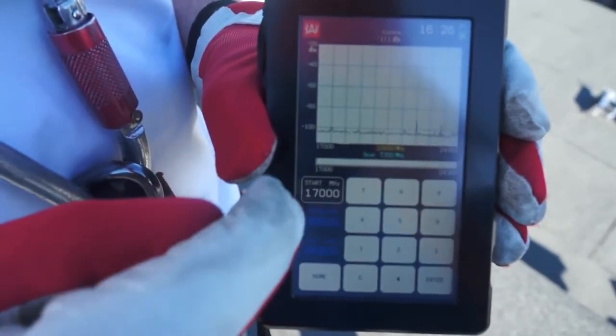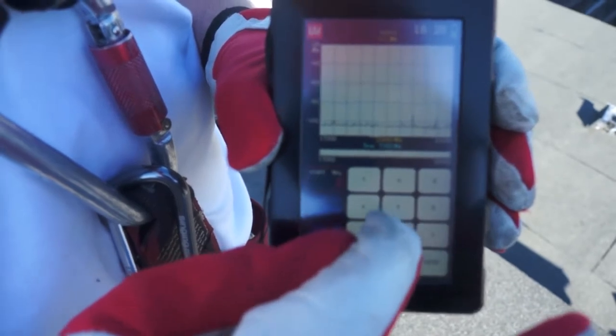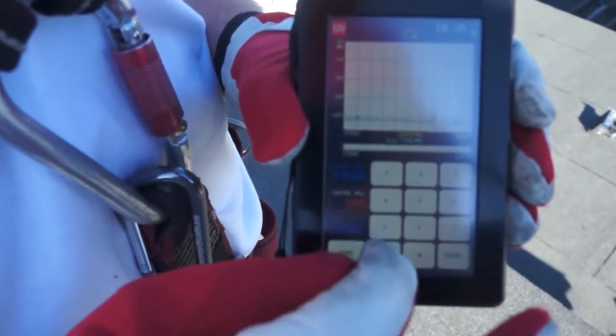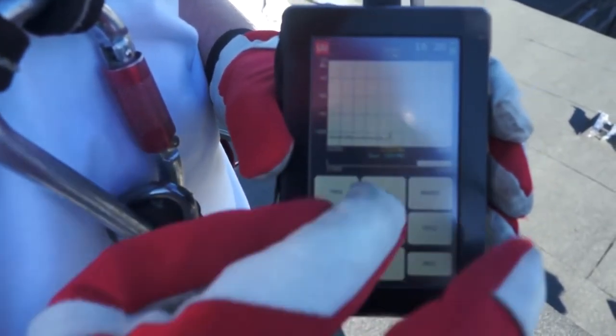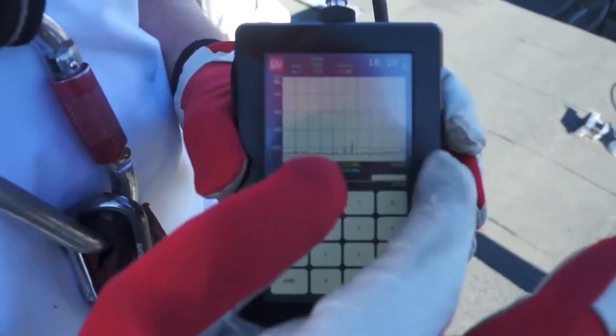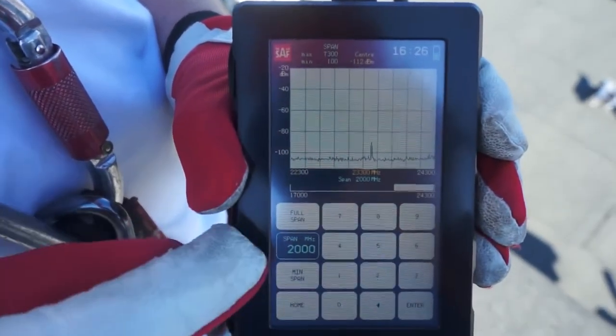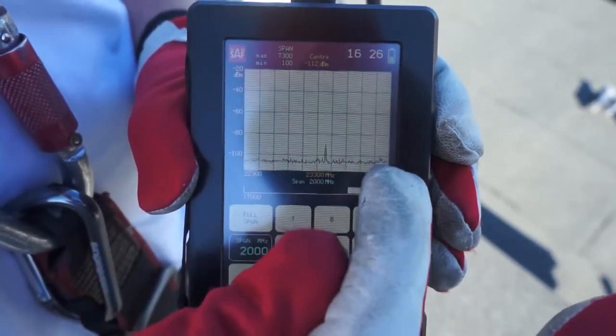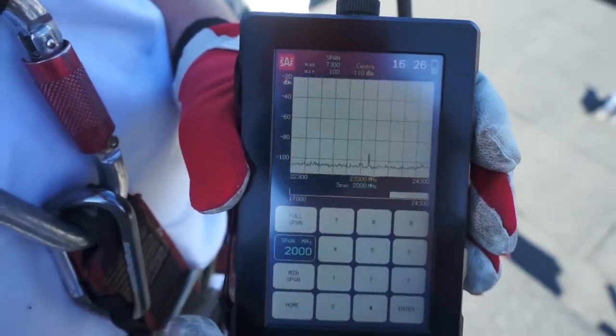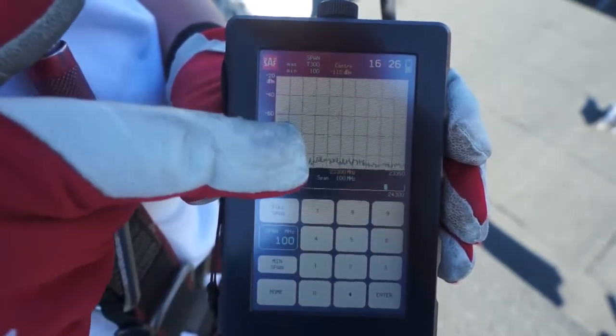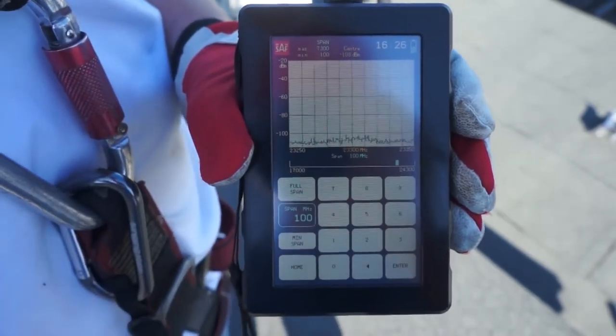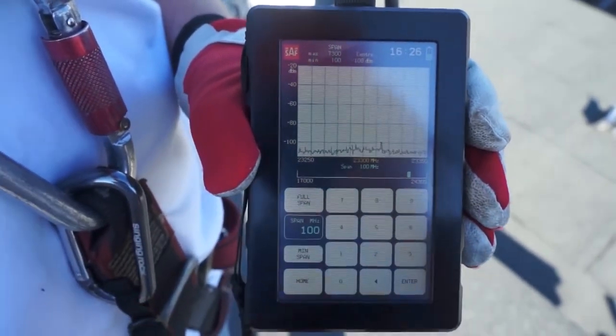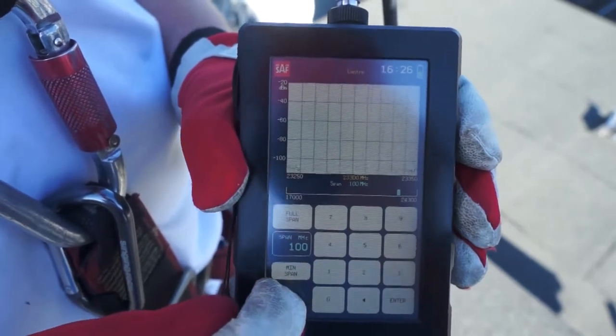Next, I'll go ahead and program the frequency, which is 23,300. We'll go ahead and put that in there. Next, we'll adjust the span or the resolution that it's looking at. Right now it's scanning a complete two gigahertz of spectrum. But we want to go ahead and adjust that down to 100 megahertz, centered on our 23.3 gigahertz for very much quicker resolution while we're doing this adjustment.